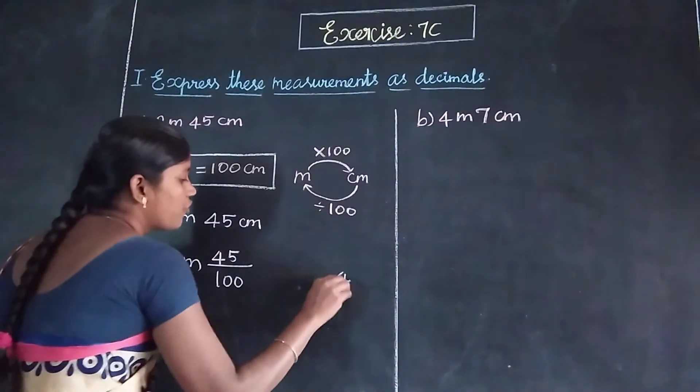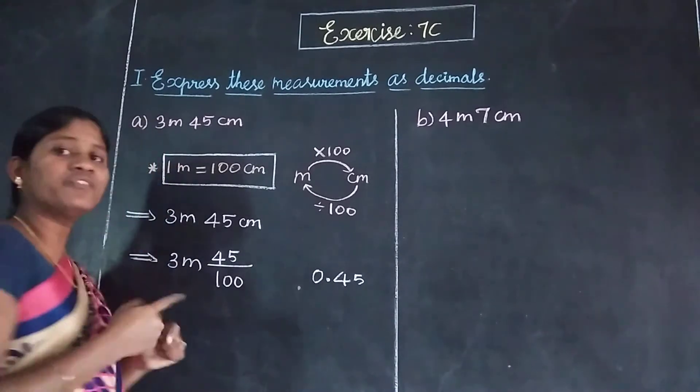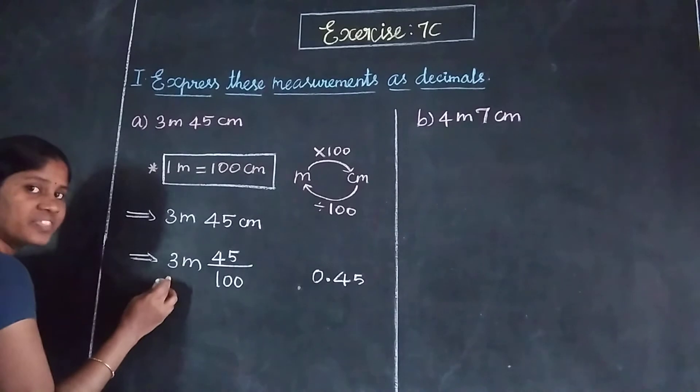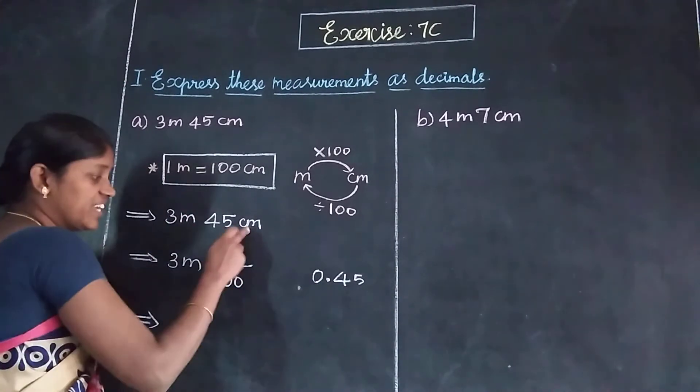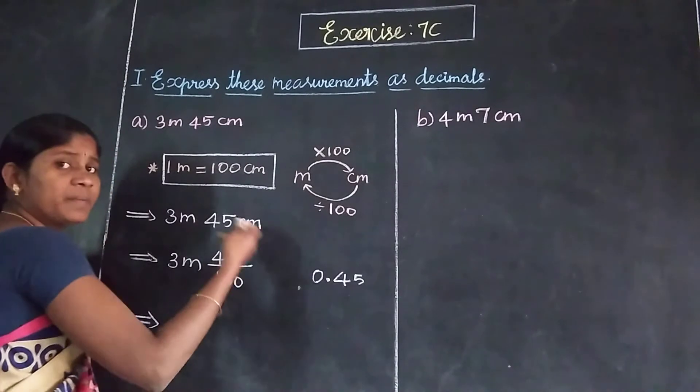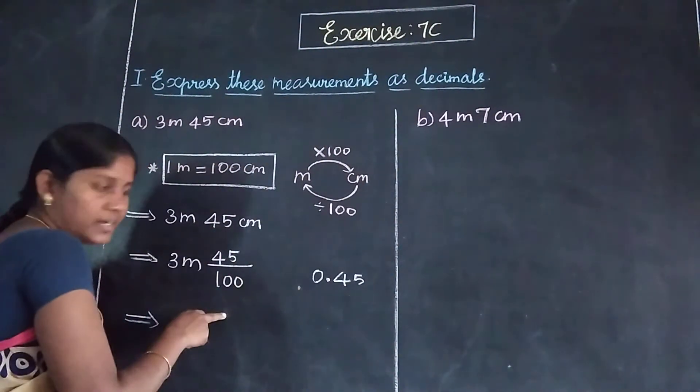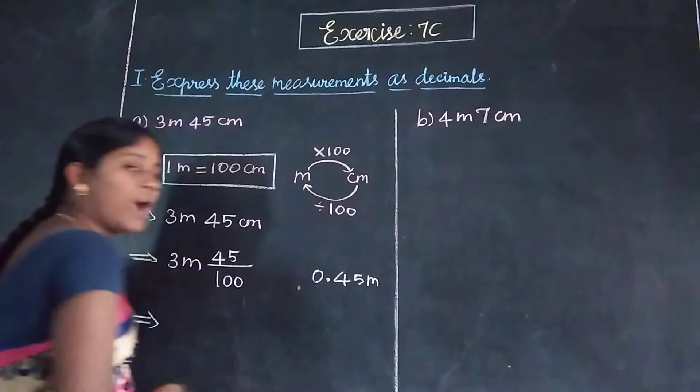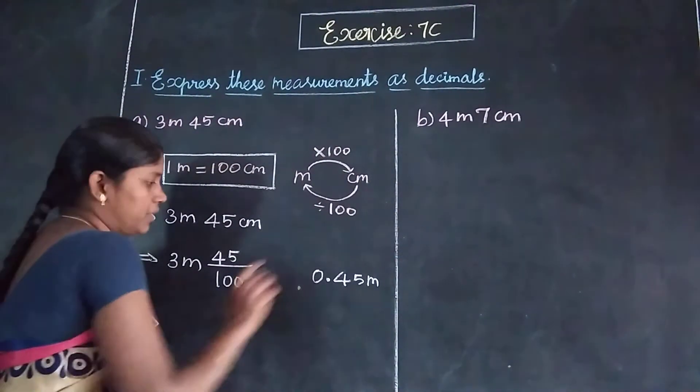45 by 100 we divide. 4, 5, two decimals we move: 0.45. So 0.45 meters. This centimeter we have converted to meters. We divide by 100: 45 by 100 equals 0.45 meters.